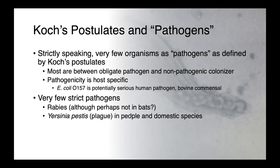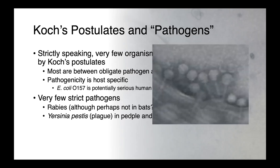Even microorganisms can be infected with other microorganisms. The image on this slide is actually a Brachyspira — an intestinal spirochete in pigs — and in this electron micrograph you can see bacteriophages that are infecting, parasitizing, and ultimately killing this bacteria. Pathogenicity is something that goes much beyond just the realm of visible animals.